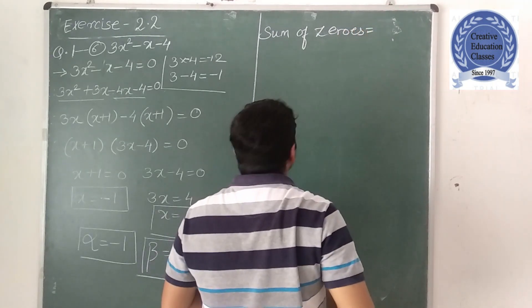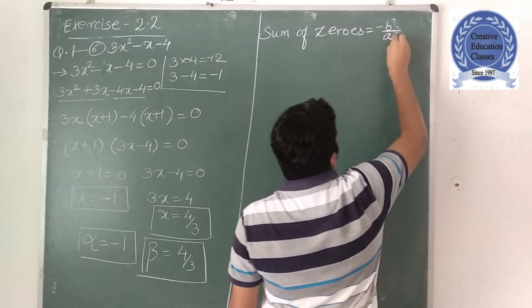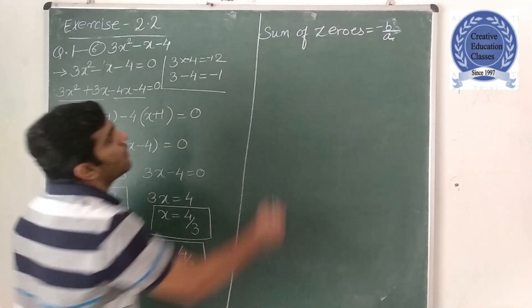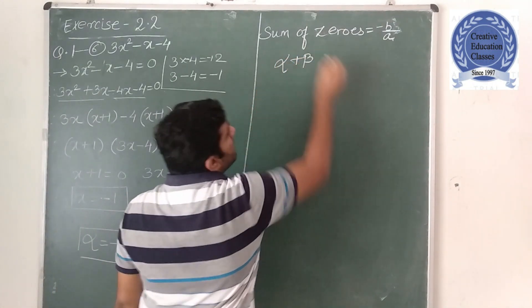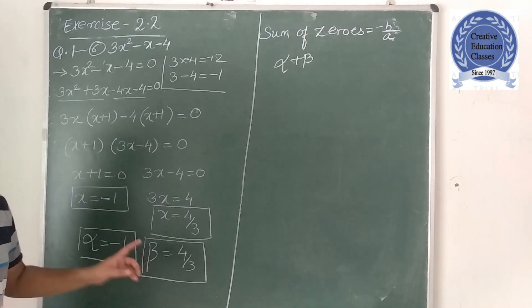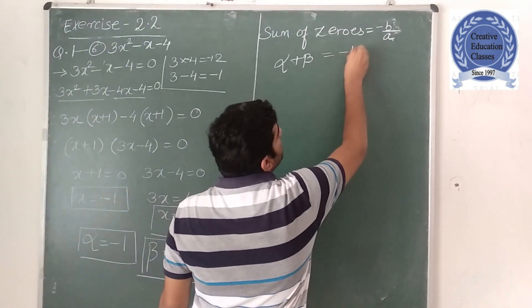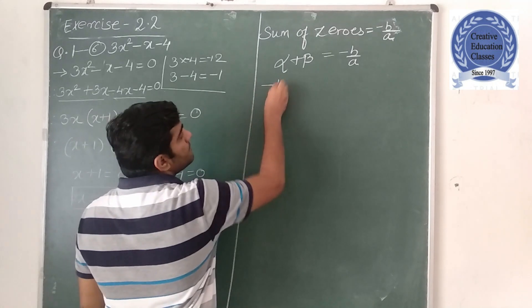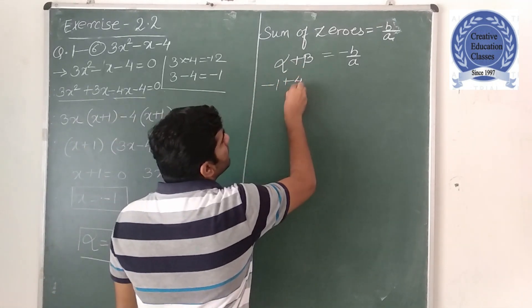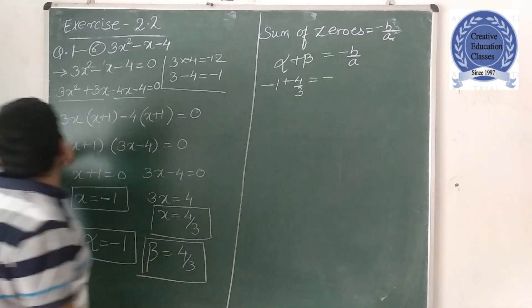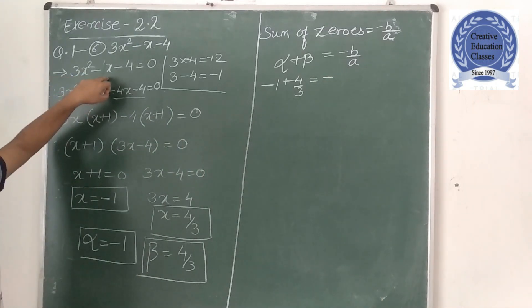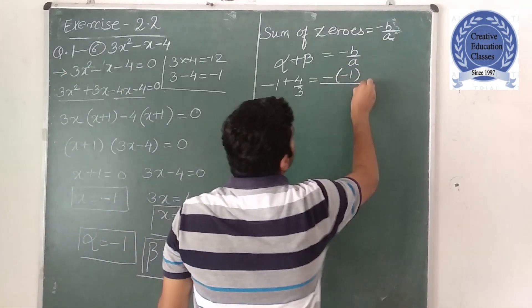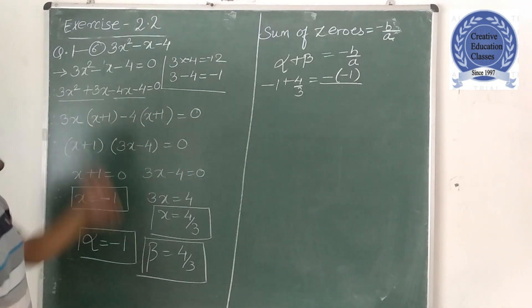So sum of zeros is equal to minus b upon a. Sum of zeros formula is alpha plus beta minus b upon a. Now alpha is what? Minus 1. Beta is what? 4 upon 3. Is equal to minus, what is b? If nothing is there, it will be 1. So it will be minus 1. What is a? A is 3.